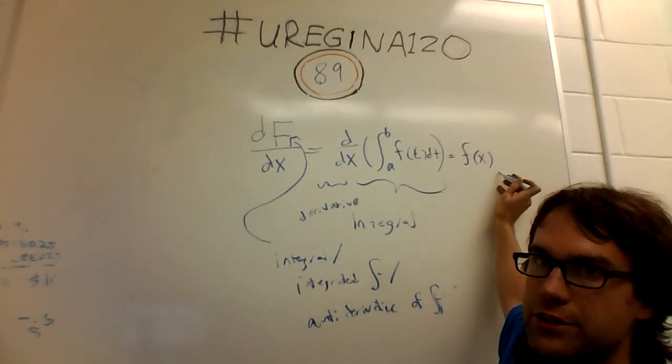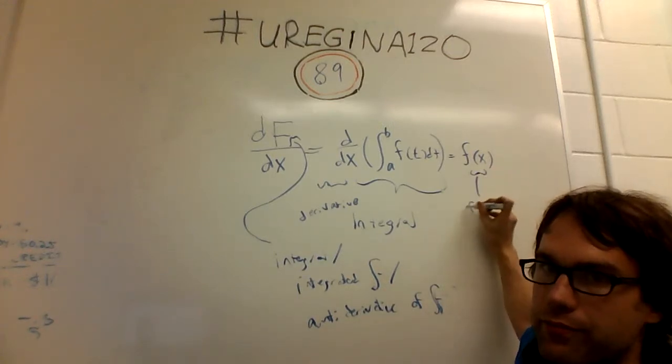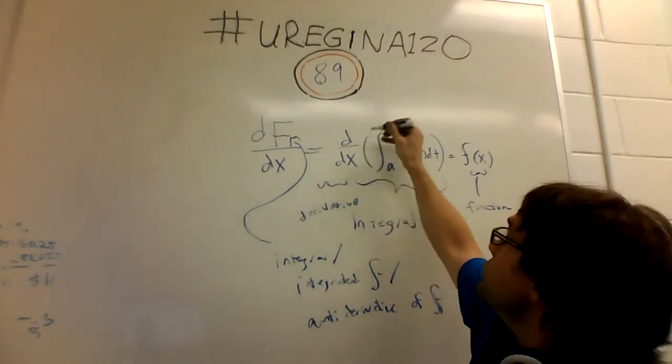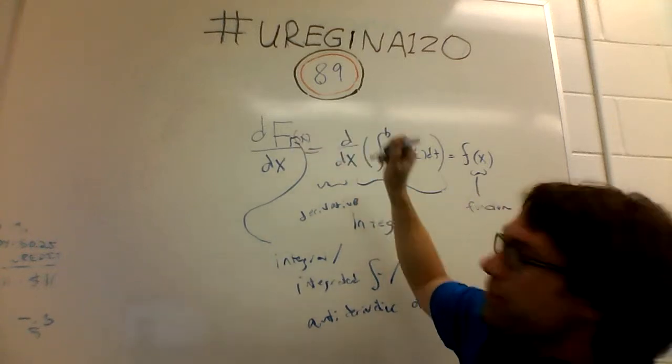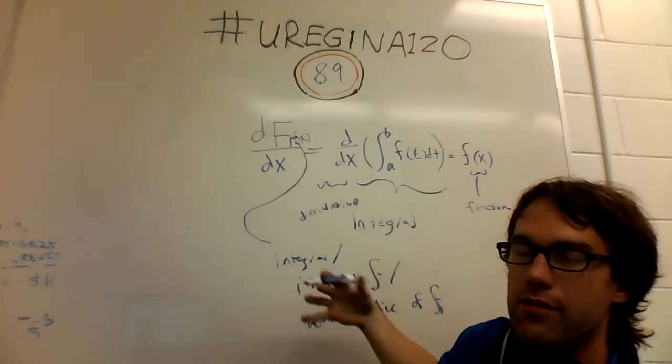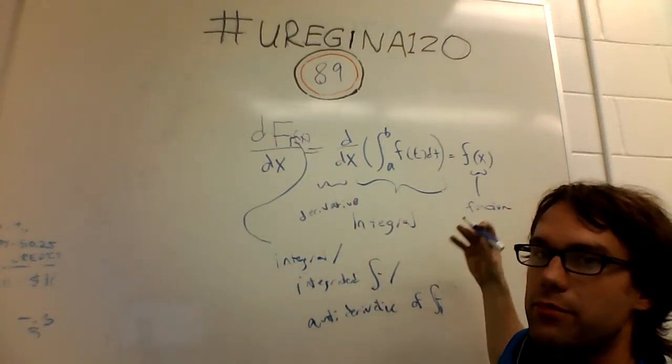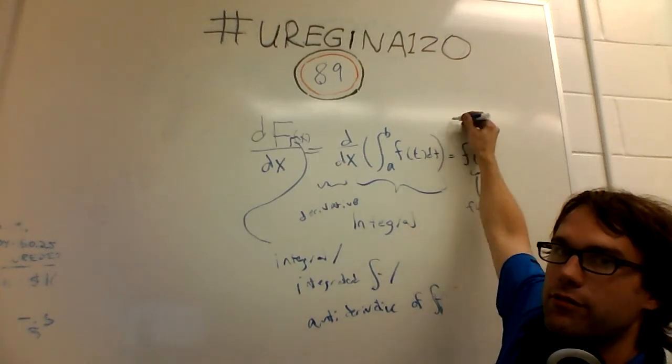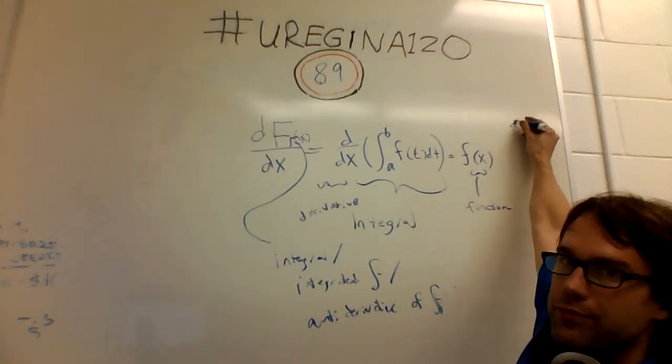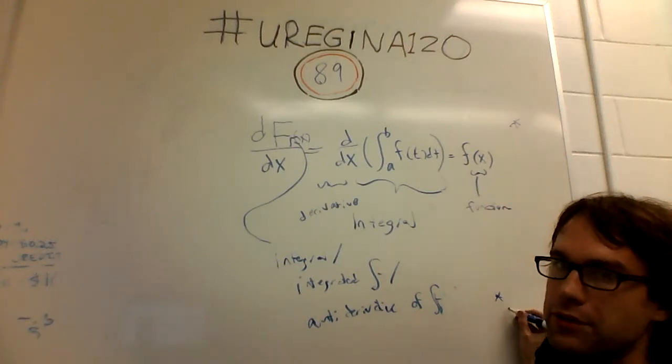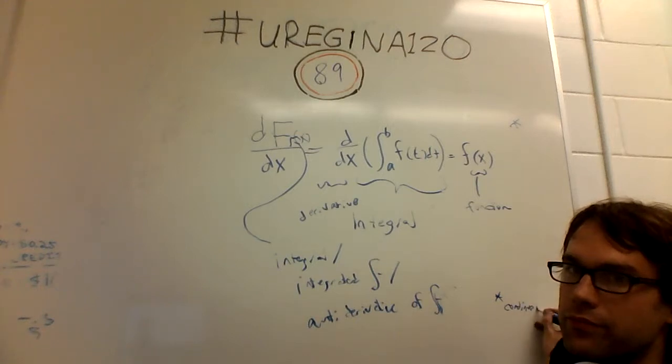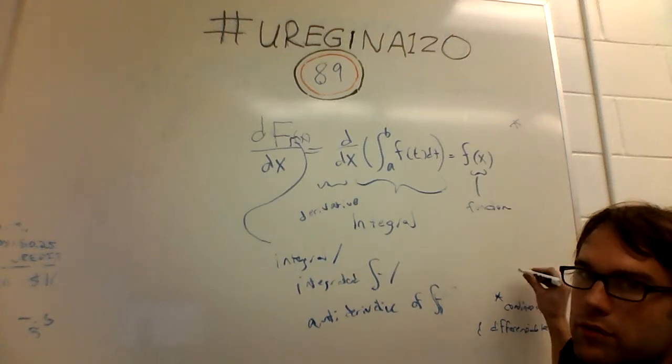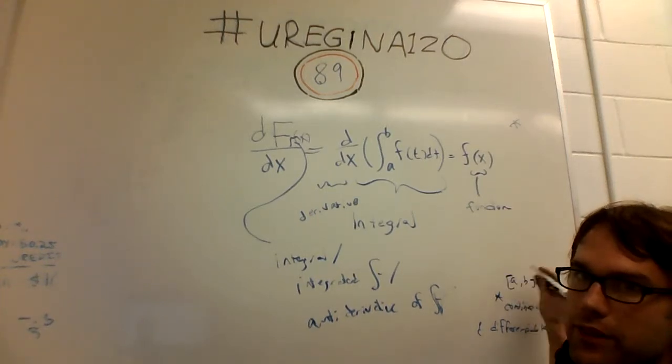So there is this function, this function f, and there's another function, this anti-derivative or this function that's defined in terms of the integral of f on some region. And I'm going to put a star around this whole thing.